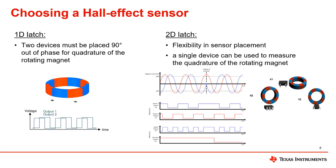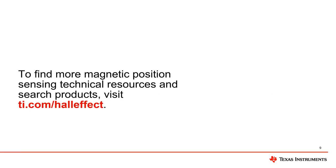TI offers 2D hall latches in addition to standard one-dimensional latches. Among these are the TMAG5110 and TMAG5111. The TMAG5110 has two independent outputs similar to the output produced by two 1D latches. The TMAG5111 integrates on-chip decoding of the dual hall latch outputs to provide both speed and direction output information instead of raw hall sensor outputs. For more information on the differences between single-axis and 2D latches, watch our TIPL video 3.2, Understanding 2D Hall Sensor Latches. To find more magnetic position sensing technical resources and search products, visit ti.com/hall-effect.